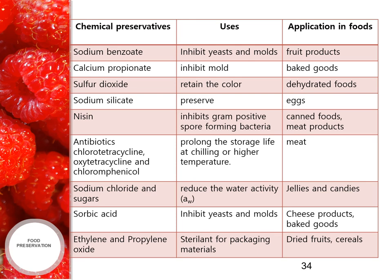Nisin is employed in canned foods and meat products. Antibiotics like chlortetracycline, oxytetracycline and chloramphenicol are used to prolong storage life at chilling or higher temperatures in meats. Sodium chloride and sugars are used to reduce water activity and are used in jellies and candies. Sorbic acid inhibits yeast and molds and is used in cheese products and baked goods. Ethylene and propylene oxide are used as sterilants for packaging material, mainly applied in dried fruits and cereals.